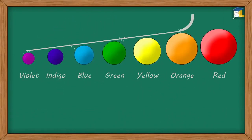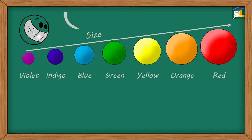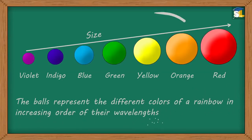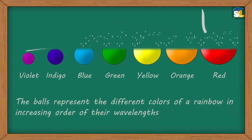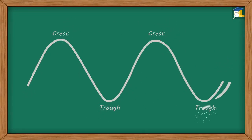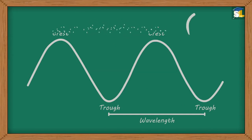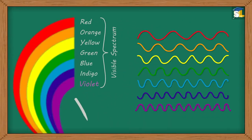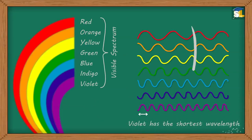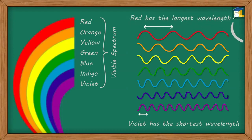Did you notice that the size of the balls increased? Yes, you guessed right. The balls represent the different colors of a rainbow in increasing order of their wavelengths. Wavelength is the distance between consecutive crests or consecutive troughs in a wave. In a rainbow, as we move from violet to red, the wavelength of colors increases. Violet has the shortest wavelength, while red has the longest wavelength.